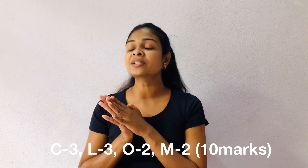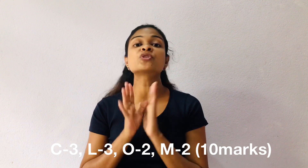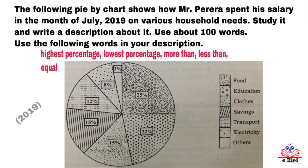I took a question from the 2019 paper, test number 14, part 2. Let's read the question. The following pie chart shows how Mr. Pereira spent his salary in the month of July 2019 on various household needs. Study it and write a description about it.